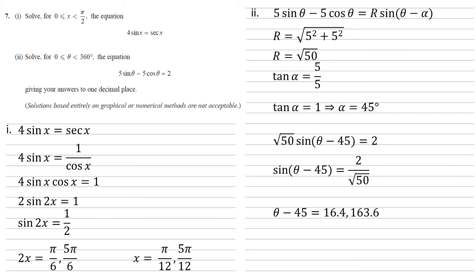Inverse sine gives us that theta minus 45 is equal to 16.4 and 163.6. And adding the 45 on gives us answers of 61.4 degrees and 208.6 degrees.